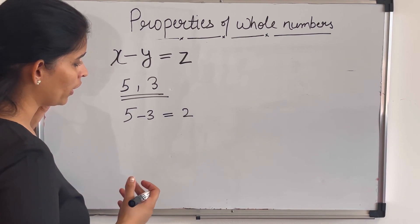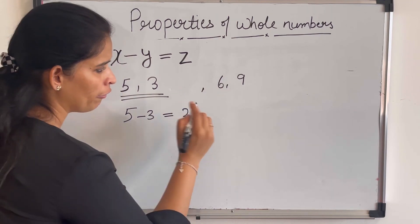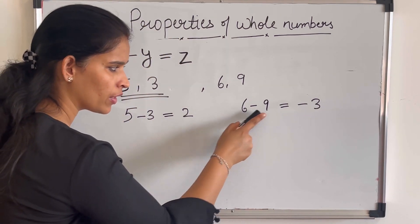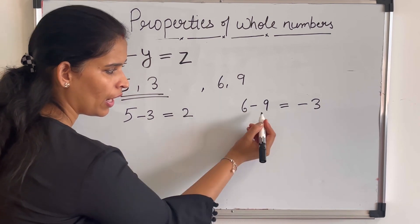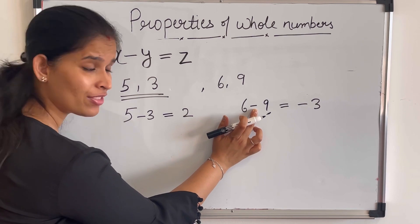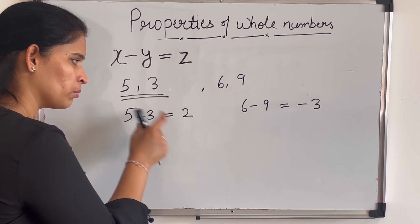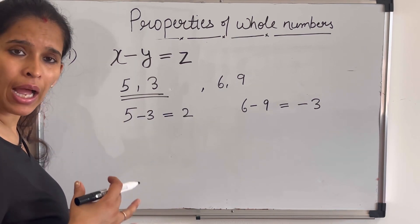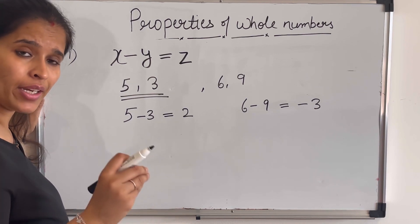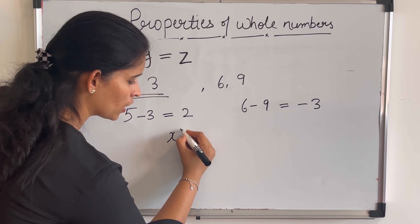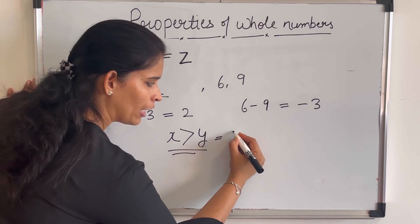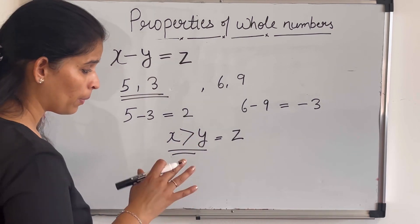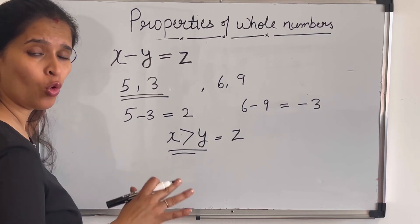But what if I have two whole numbers 6 and 9? If I do 6 minus 9, the value will be minus 3, because 9 is greater than 6, so the result is negative. Minus 3 is not a whole number, because whole numbers start from zero onwards. So closure property is not always applicable on subtraction — only if x is greater than y will the result be a whole number and the closure property holds. If y is greater than x, it won't hold.